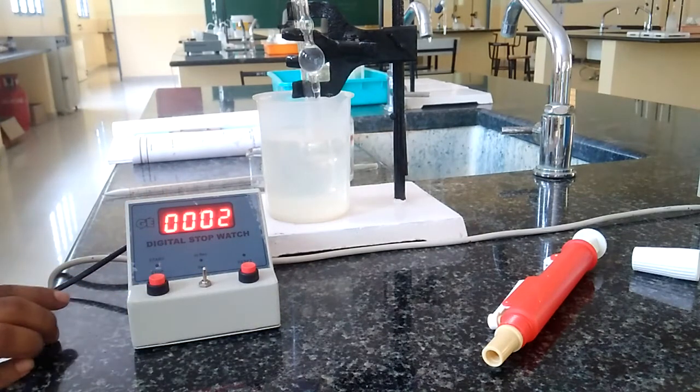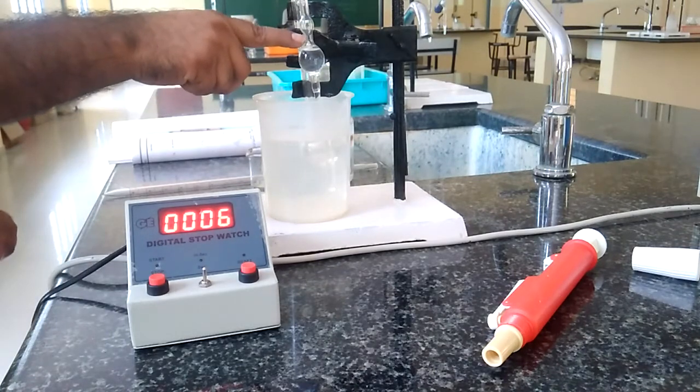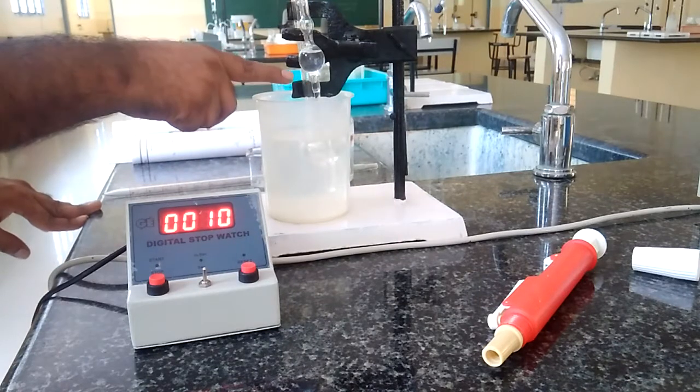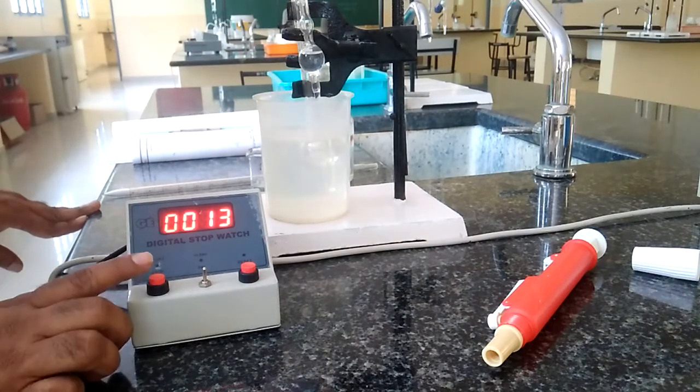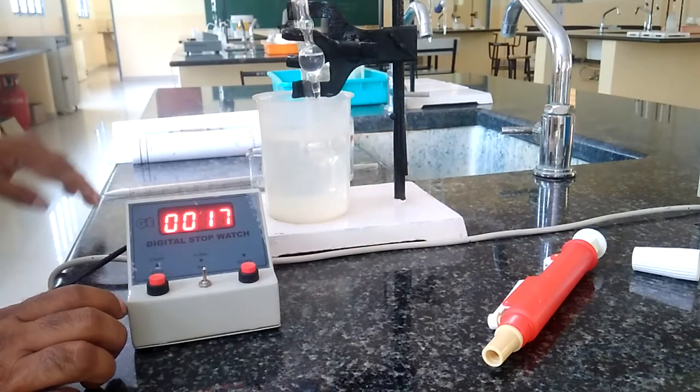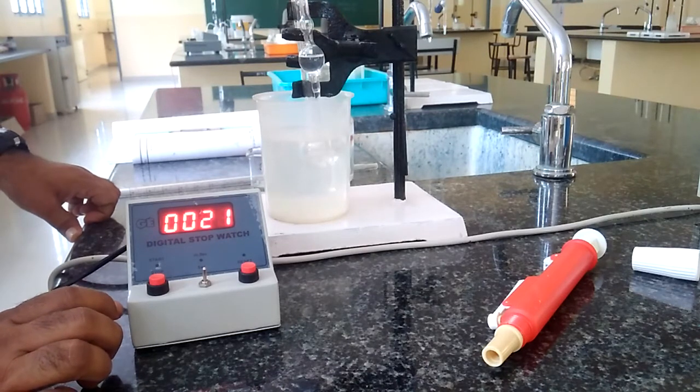I am recording the time of flow from the upper mark to the lower mark. Whenever the liquid touches the lower mark, immediately we have to stop this stopwatch so that we can record the time of flow of liquid from the upper mark to the lower mark of the Ostwald viscometer.